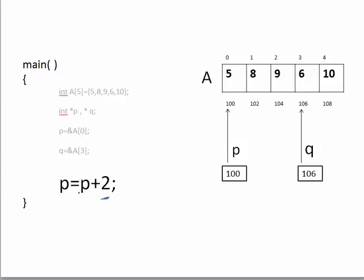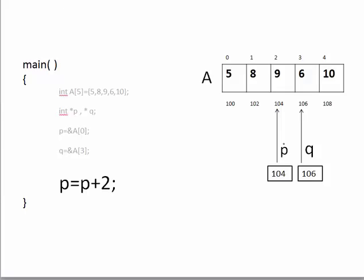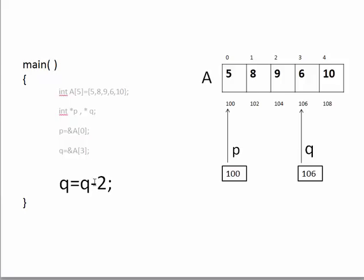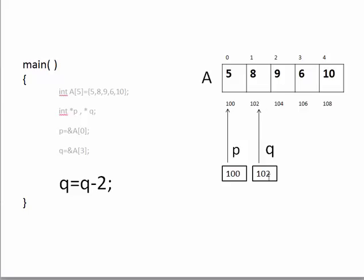Next is constant addition to a pointer. If I add a constant value, say 2, like P + 2, this means move P forward by two elements — two integers — so P moves forward by four bytes and should point to address 104. Similarly, constant subtraction: Q - 2 means move Q backward by two elements, two integers, so Q points to address 102, decremented by two integers.